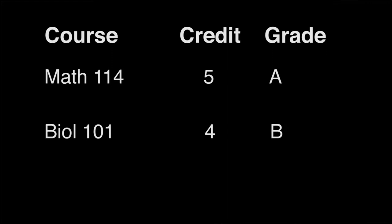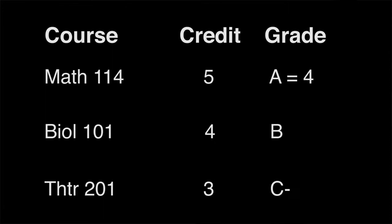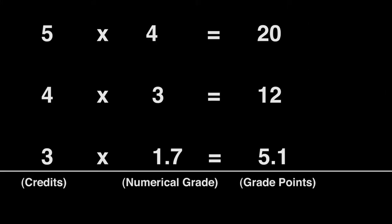Biology 101: four credits with a B. Intro to Cinema: three credits with a C minus. You'll need to change the letter grades to numbers. So the A equals four points, the B equals three points, and the C minus is 1.7. You'll multiply that numerical grade times the number of credits for each class to get grade points.